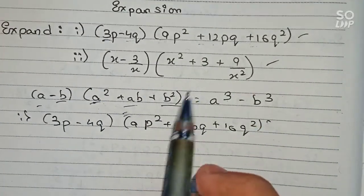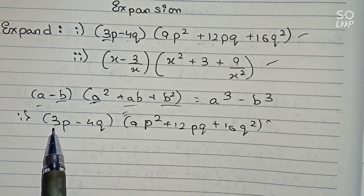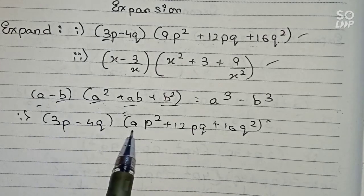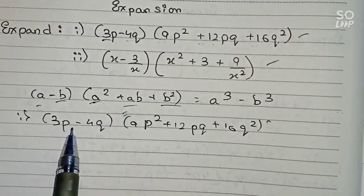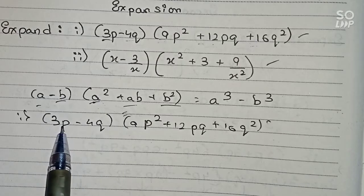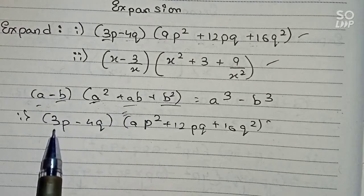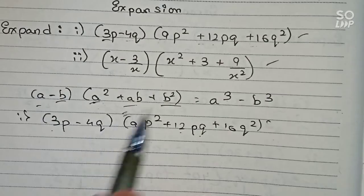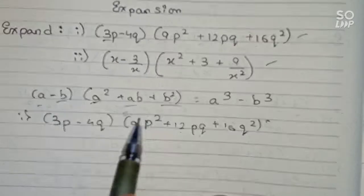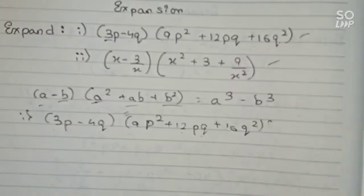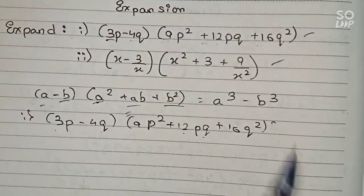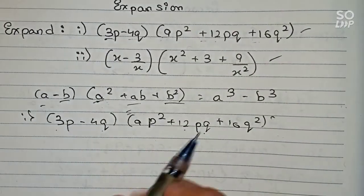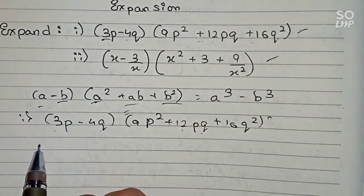So I will check: a squared means 3p squared equals 9p squared, ab means 3p into 4q equals 12pq, and b squared means 4q squared equals 16q squared. That means the full equation is confirmed to be in the identity format.